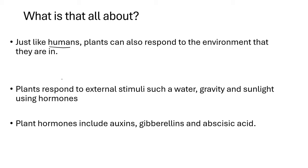Even if a plant is not visibly moving, it can still respond to certain environments. Plants respond to external stimuli — the environmental conditions or things happening around a plant — such as the presence of water, gravity, and sunlight. All of these can affect the plant and make it respond in a certain way.